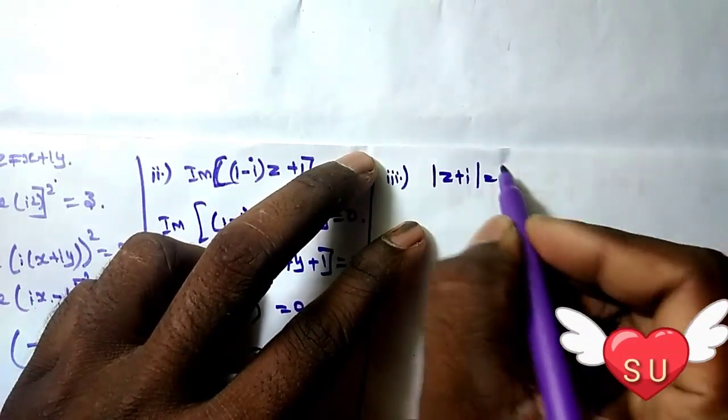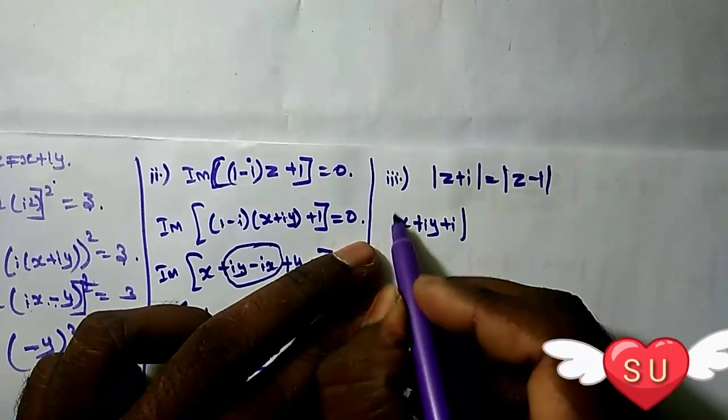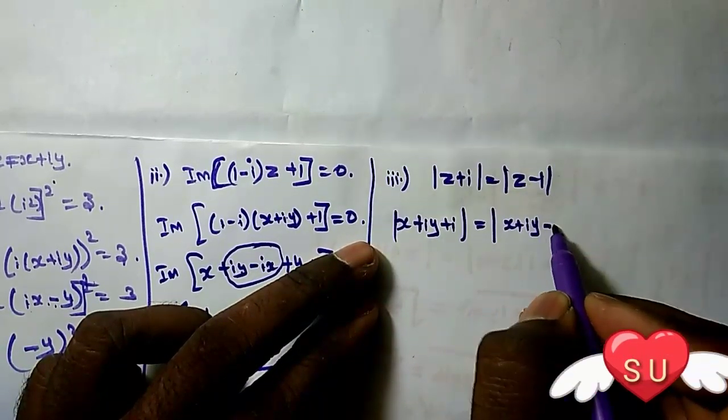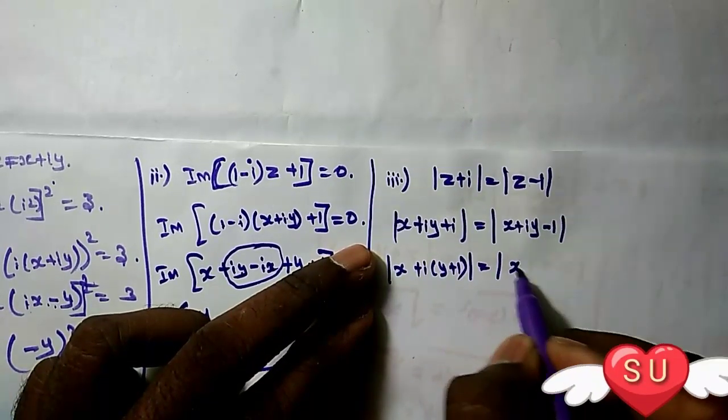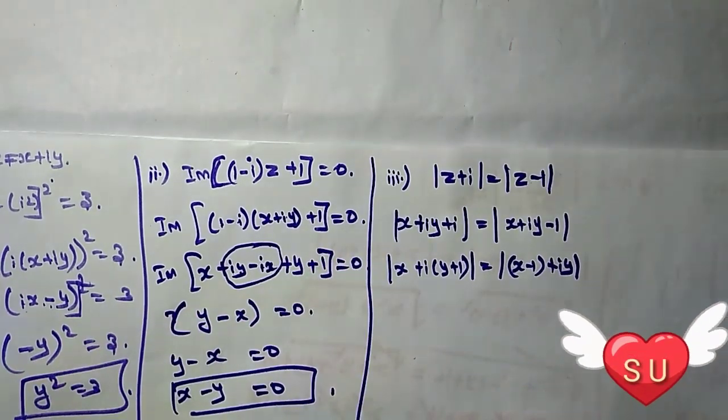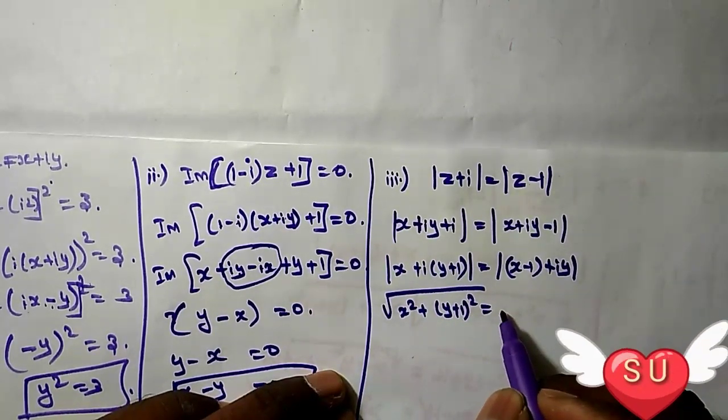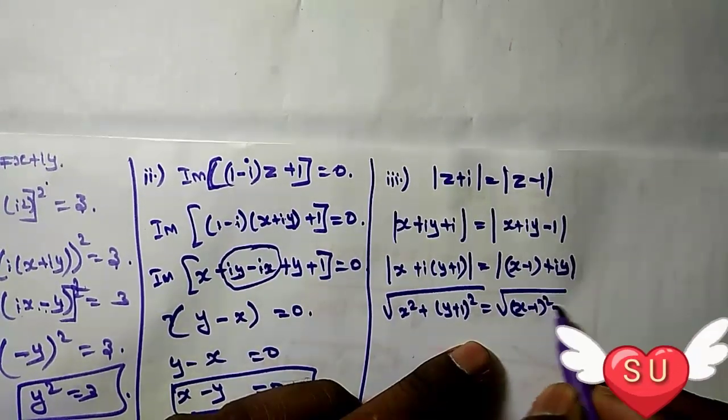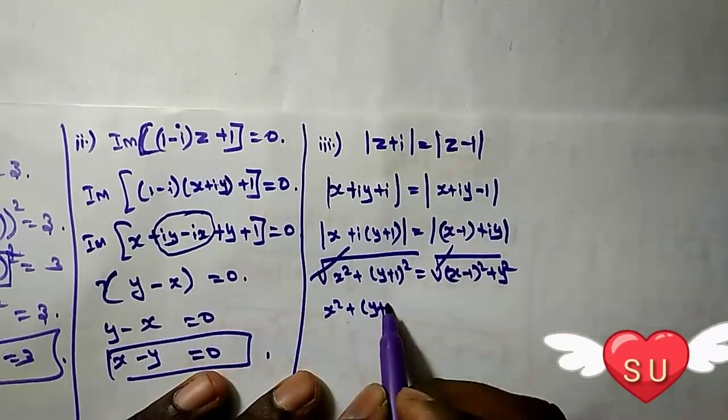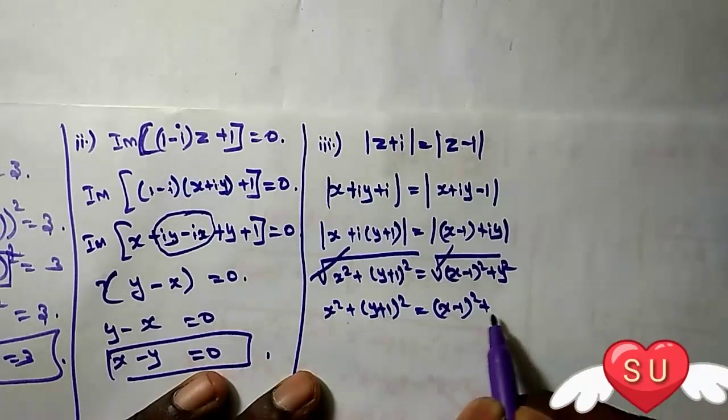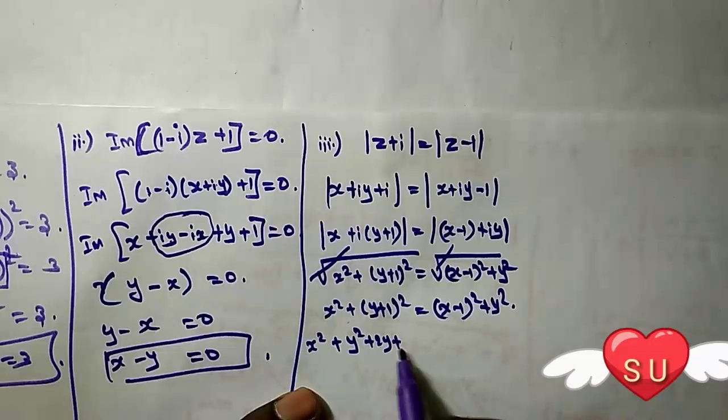Third problem: |z plus i| equals |z minus 1|. Substituting z equals x plus iy: |x plus i(y plus 1)| equals |(x minus 1) plus iy|. Taking the modulus, we get square root of [x² plus (y plus 1)²] equals square root of [(x minus 1)² plus y²].